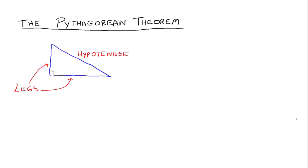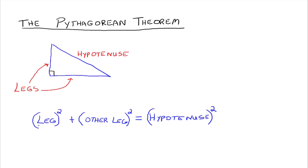The Pythagorean Theorem states that if we take one leg and square it, and then take the other leg and square it, and then add those two things up, they will be equal to the hypotenuse squared. So it looks like this: leg squared plus the other leg squared equals hypotenuse squared. There are all kinds of proofs for the Pythagorean Theorem — just do a Google search for proof of Pythagorean Theorem if you're interested, and you'll see all kinds of different approaches to proving that the Pythagorean Theorem is indeed true.